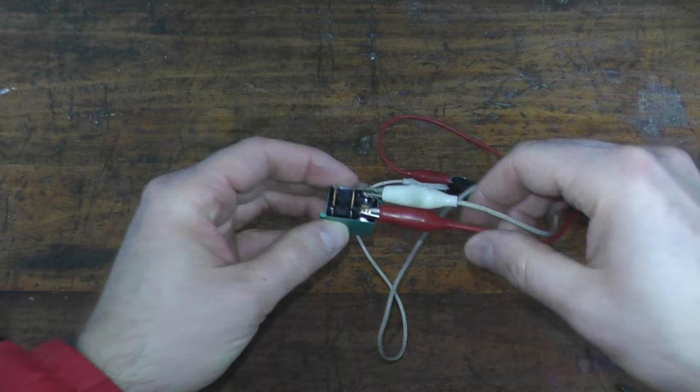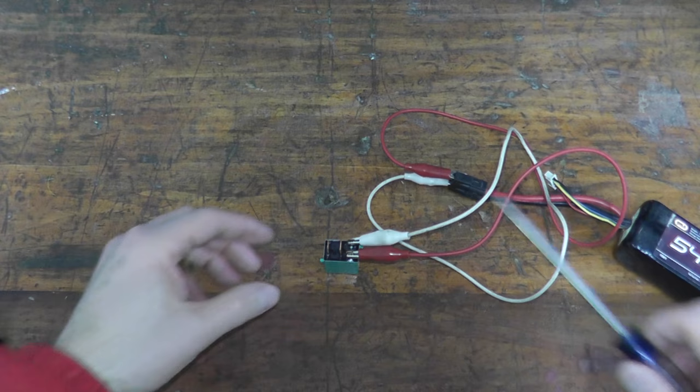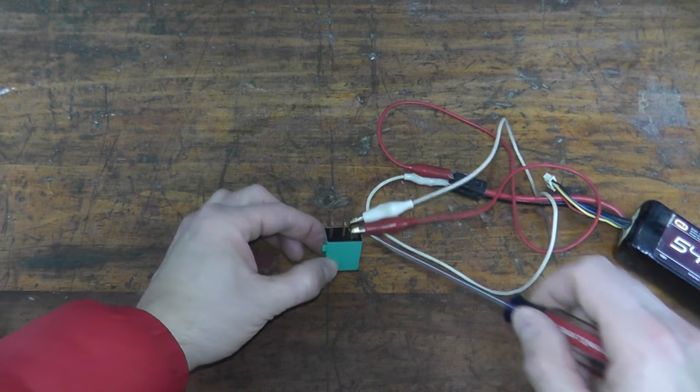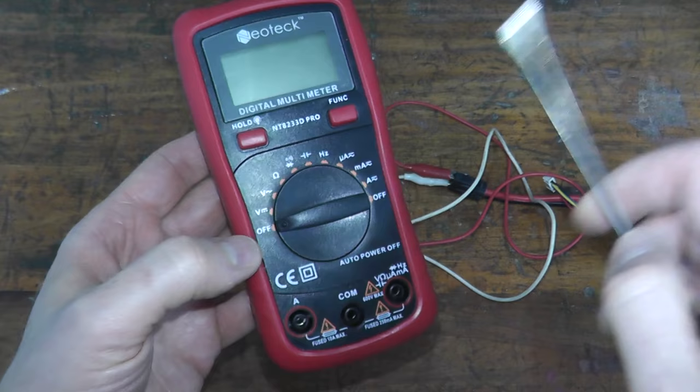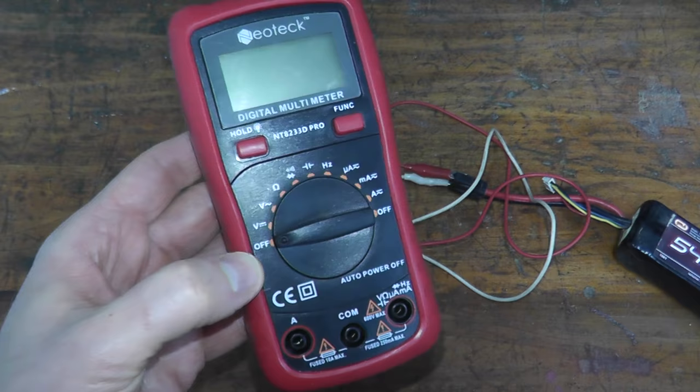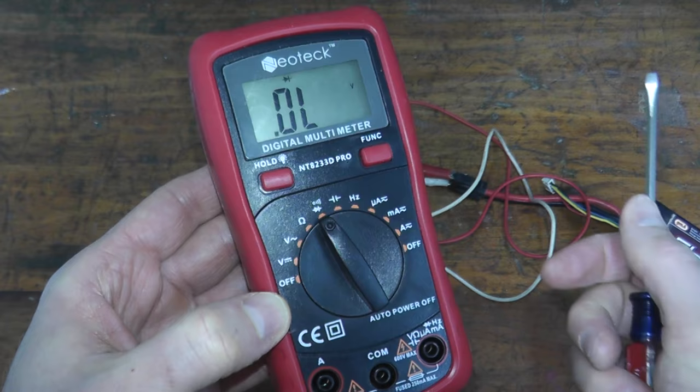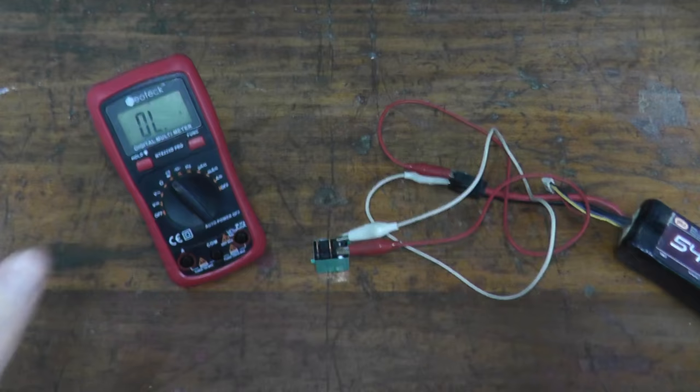But now I need to verify that we have continuity. Inside here, there's a little switch that moves and that connects these two terminals. Continuity just means two points make a connection. To test for continuity, you need a multimeter. This is only fifteen dollars, this exact one off Amazon. Look for the wifi hotspot symbol. That's continuity. We need to verify that inside the relay there's a connection.